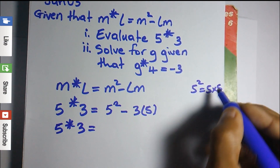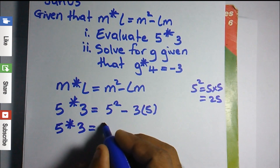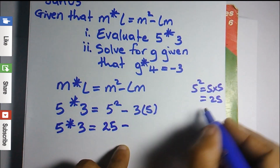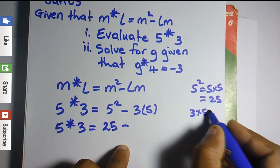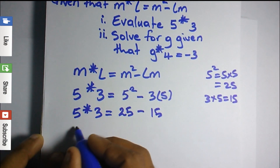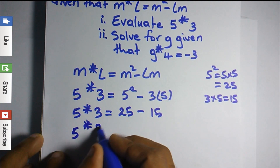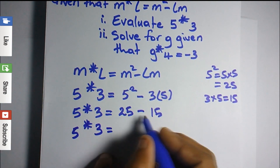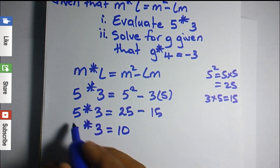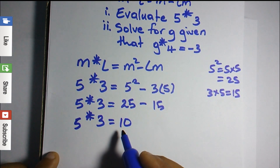Five squared is equal to five times five, which is 25. Then three times five is 15. So five asterisk three is equal to 25 minus 15, which equals ten. Therefore, 5★3 = 10.